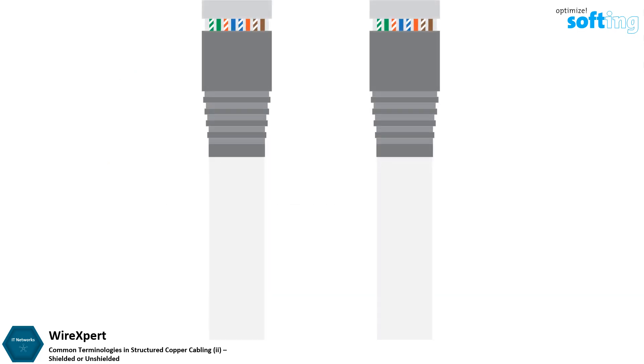There are two types of twisted pair cables: the Unshielded Twisted Pair, or UTP, and the Shielded Twisted Pair, or STP.